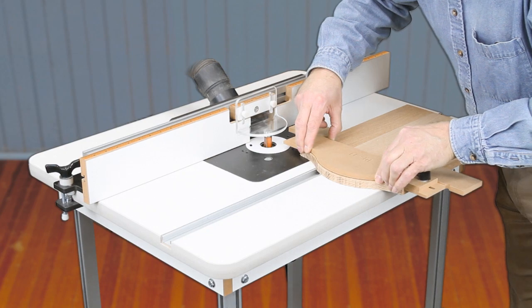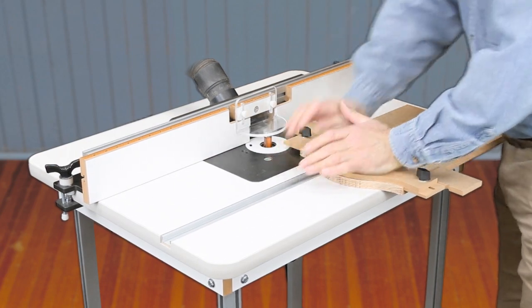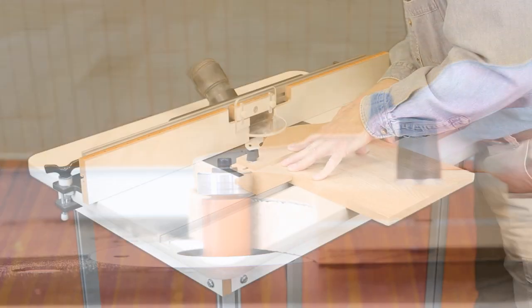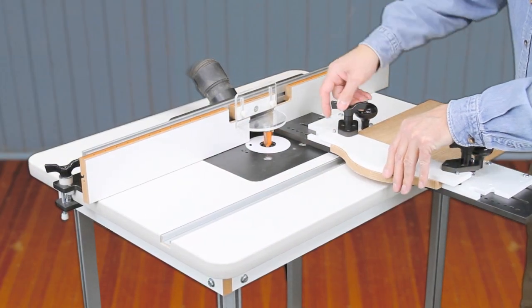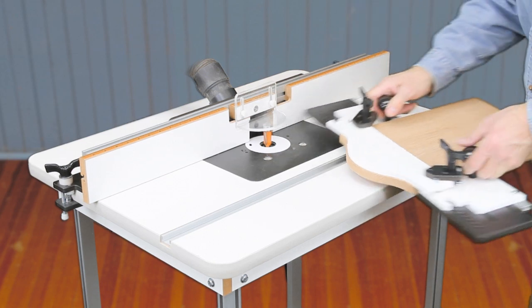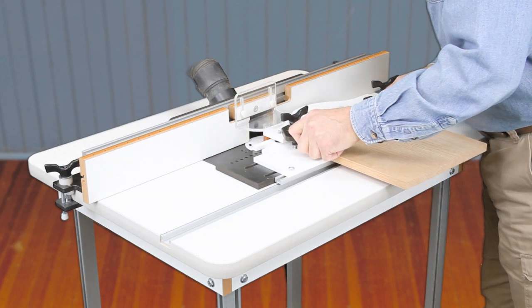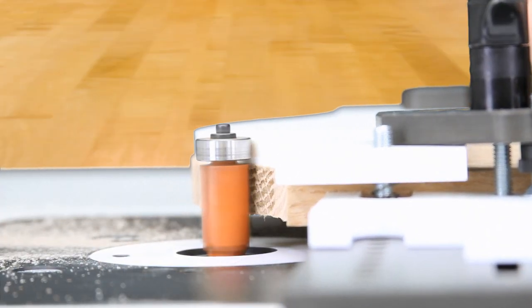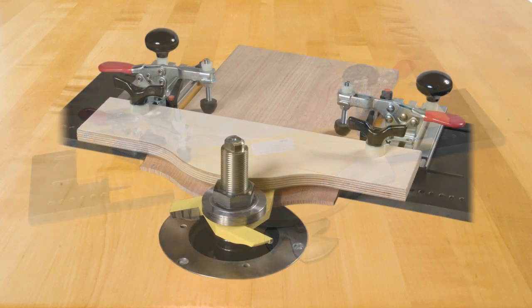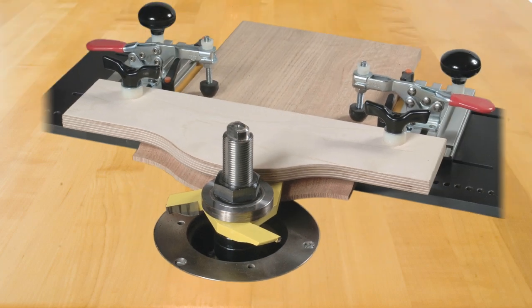If using our door templates alone, tape the template to the panel and machine the finished shape with a flush trim bit. If using the door template with our Frame and Panel Master, reinstall the panel and machine the finished shape with a flush trim bit. You can also use the Frame and Panel Master to hold the part and machine the raised panel profile. If using our door templates with our heavy-duty Panel Master, reinstall the panel in the jig and machine the finished shape with a pattern cutter on your shaper.